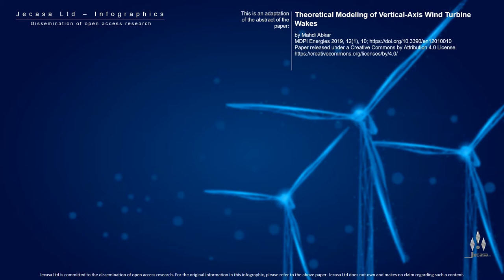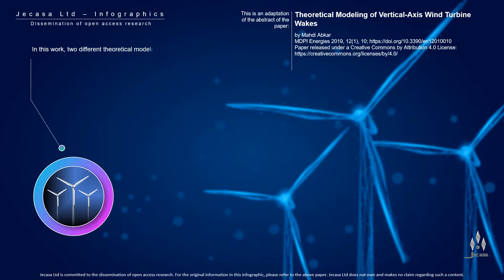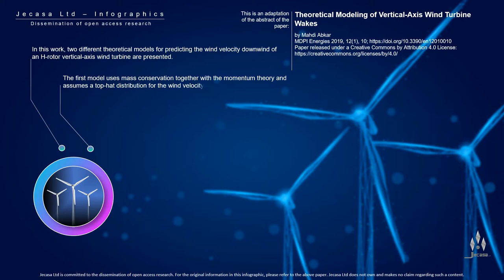Theoretical modeling of vertical axis wind turbine wakes. In this work, two different theoretical models for predicting the wind velocity downwind of an H-rotor vertical axis wind turbine are presented. The first model uses mass conservation together with the momentum theory and assumes a top-hat distribution for the wind velocity deficit.